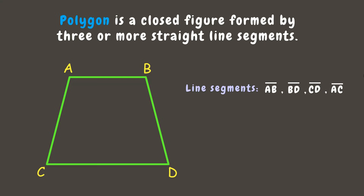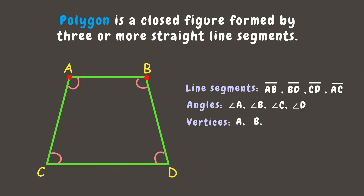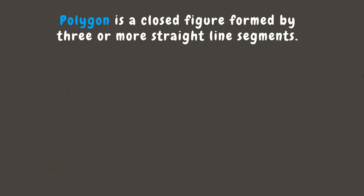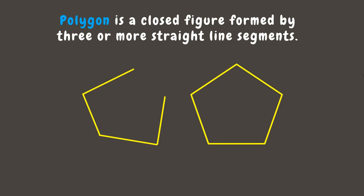Now when two line segments meet at a certain point, they form an angle. This polygon has angle A, angle B, angle C, and angle D. The points where line segments meet are called vertices. In this polygon it has vertex A, vertex B, vertex C, and vertex D.